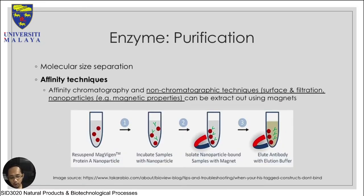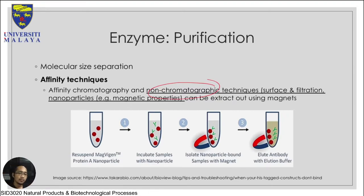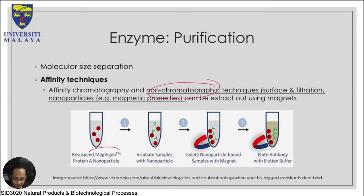Another example of an affinity technique falls under the subcategory of non-chromatographic technique. Chromatographic technique normally involves a column where you purify through a separation process. A non-chromatographic technique uses a surface or filtration - filtration is not a chromatographic technique - or as shown here, a nanoparticle approach using magnetic properties to actually purify your sample.